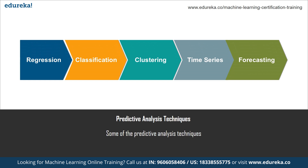The dependent variable is also referred to as the target variable, and the independent variables are called predictors. Logistic regression is a special case of linear regression where we only predict the outcome for a categorical variable. It predicts the probability of the event using the log function. Next up we have classification. Classification is a process of categorizing a given set of data into classes, and it can be performed on both structured and unstructured data.